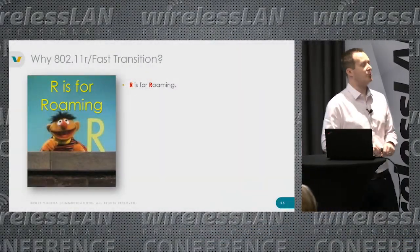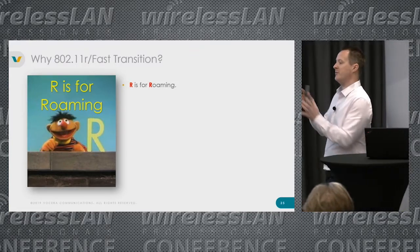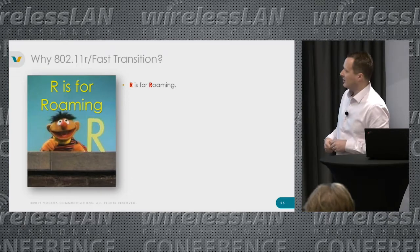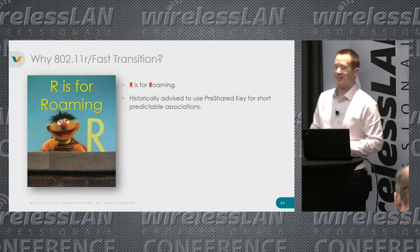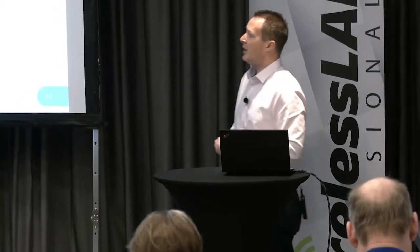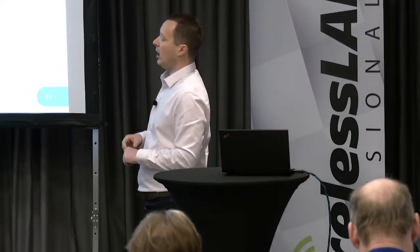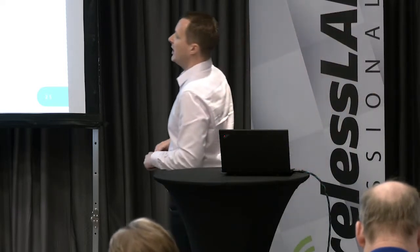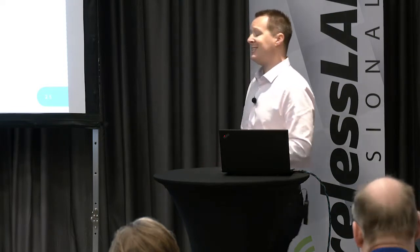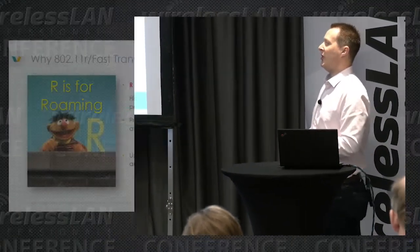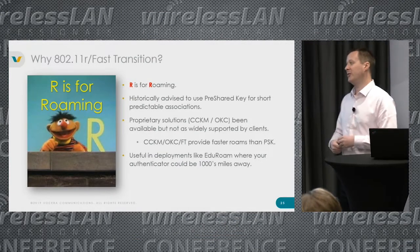On to 11r — fast transition. R is for roaming, that's how I remember it. This is the easy one. Despite all the scanning, roaming is really that bit where you're trying to transition from one access point to another, and that's where 11r really helps. Historically we've advised against dot1x for voice because of the time taken for full RADIUS authentication. We've had proprietary solutions like CCKM and OKC to improve the dot1x experience, but they weren't standardized, so a lot of places didn't support them. 11r is also essential with things like eduroam where your authenticator could be thousands of miles away.